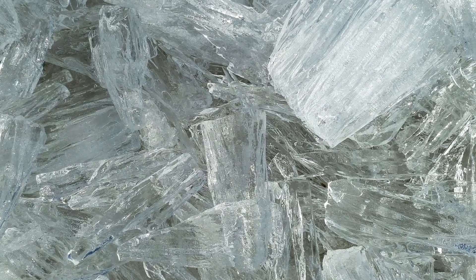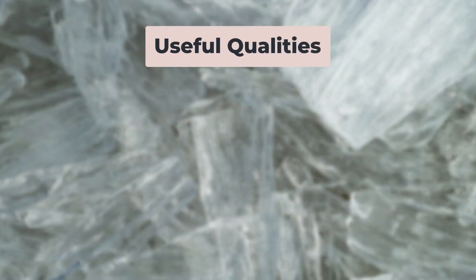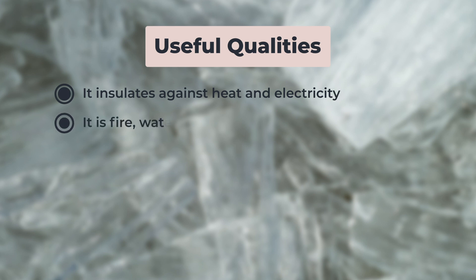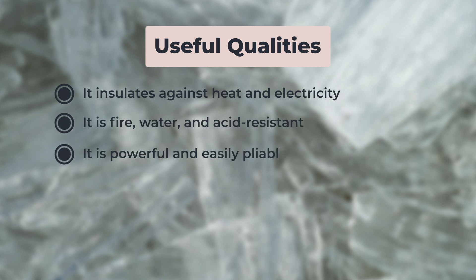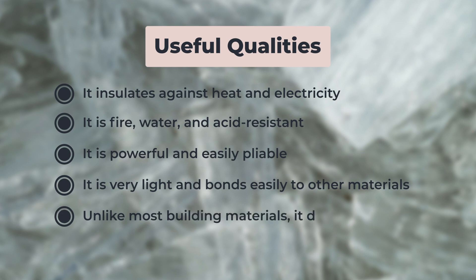Chemical confirmation will always be required. Asbestos has many useful qualities when it was used in manufacturing. It insulates against heat and electricity. It is fire, water and acid resistant. It is powerful and easily pliable. It is very light and bonds easily to other materials. And unlike most building materials, it does not degrade over time.